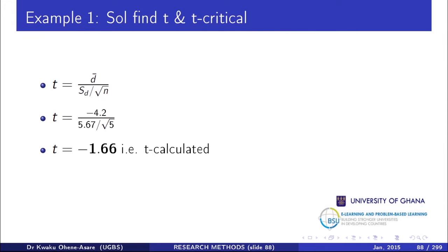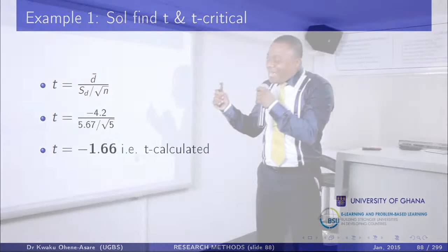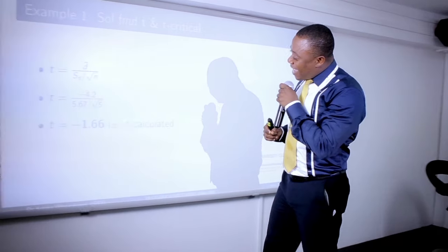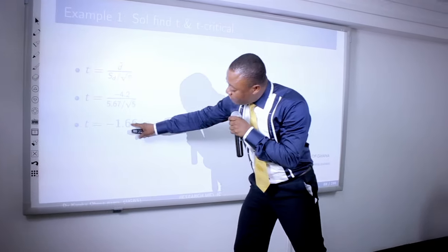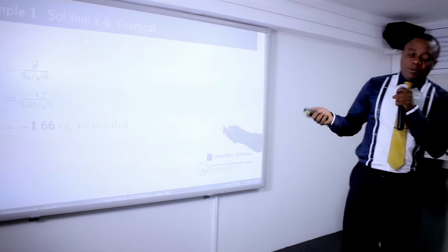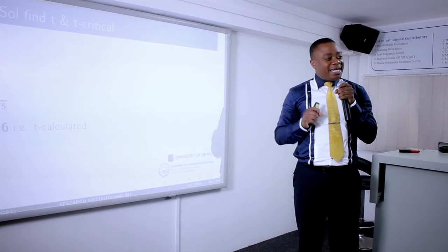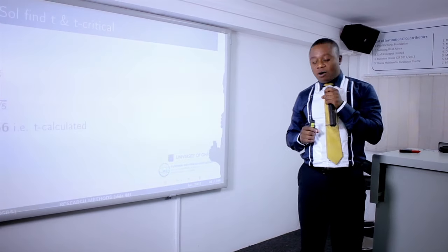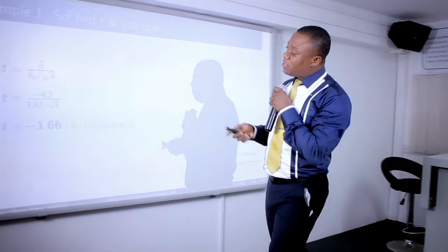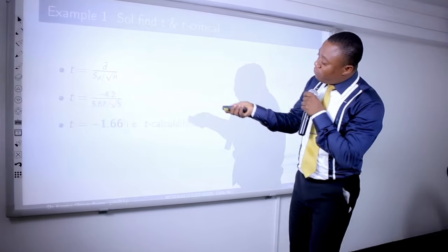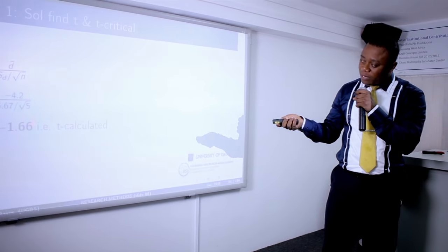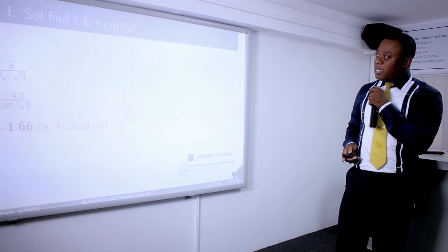When you compute t correctly using brackets, the t-calculated is negative 1.66. This value will now be compared with the t-tabulated to make a conclusion.